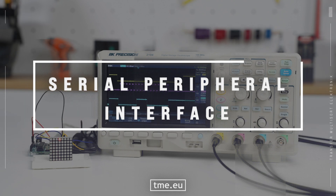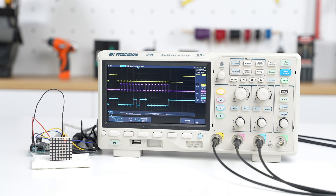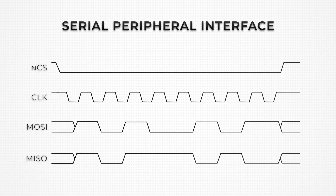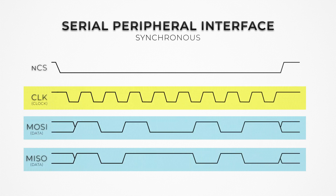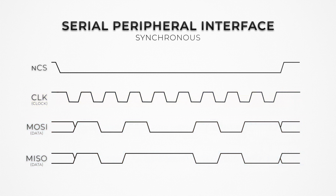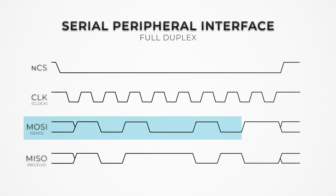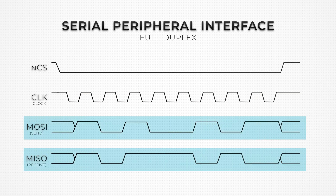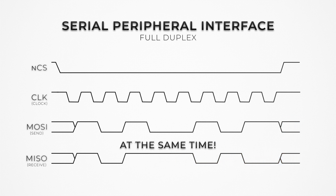Here we can see and understand what the MCU is sending to its peripherals and decode it. SPI is synchronous and full duplex. Synchronous means that this interface uses different lines for data and a clock, which ensures that both the MCU and the peripherals are in perfect sync. Full duplex means that the SPI has separate lines for sending and receiving information, and in certain situations can transmit and receive data at the same time.